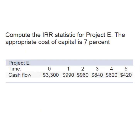So here we have a project and we're going to look at their cash flows. At time zero, which is the point at which the project has begun, the company will have to spend $3,300 — a negative cash flow — to launch the project. The project has a five-year life, and we can see the cash flows for each of those five years. The cost of capital for the firm is 7%, so when we get the IRR, we're going to compare it to that 7%.